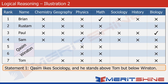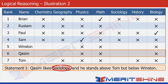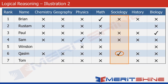Statement one tells us that Qasim stands below Winston. If we look at the highlighted cells, we can infer that Winston would be rank five and Qasim rank six, so we arrange it accordingly. Since Qasim likes sociology, we put a check against sociology and a cross against the rest of the subjects in the highlighted row. Now look at the highlighted column corresponding to sociology — since a check is already there, we can safely cross the rest of the cells. This means sociology is liked by Qasim and nobody else among the seven friends.